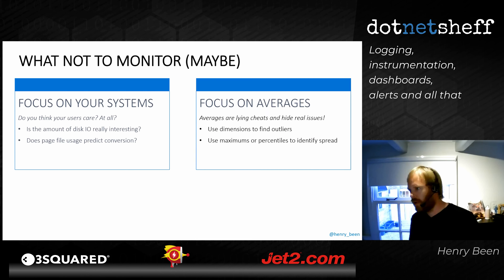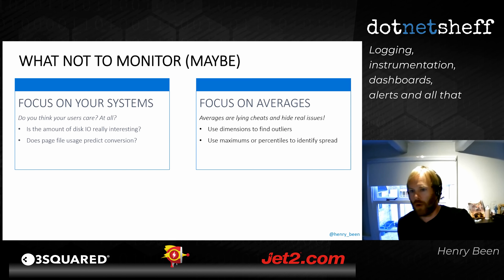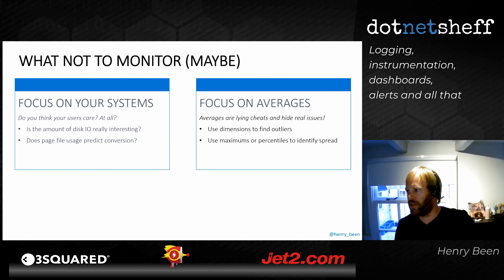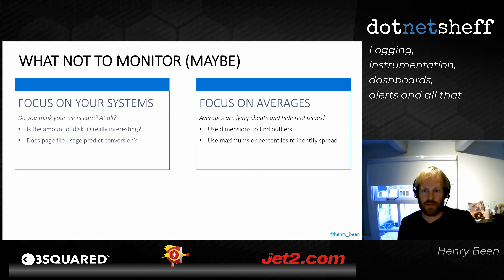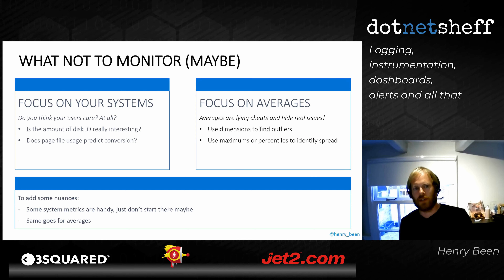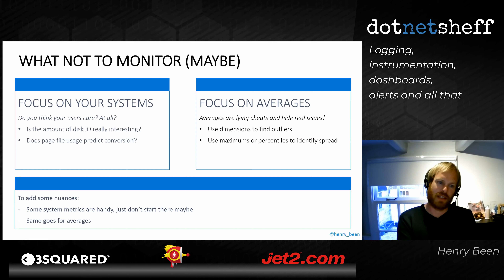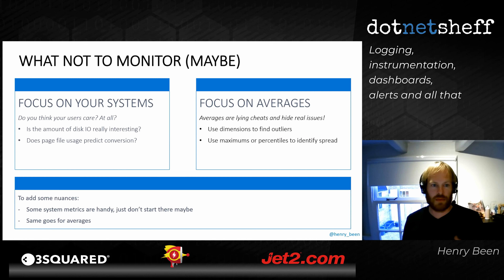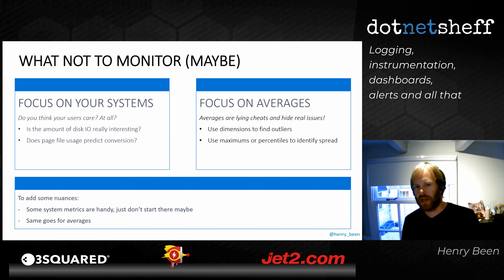Another trap is focusing on averages. There are a whole bunch of APIs with an average response time of around 100 milliseconds all day on every dashboard — and there are a lot of outliers and problems hidden in that average. Looking only at averages can be a deception — or to say it directly: averages are lying, cheating bastards. That's not to say system metrics have no value — if free disk space drops from 10 gigs to 1 gig overnight, there will be no happy users tomorrow. System metrics can be great leading indicators, but don't blindly look at those two only.